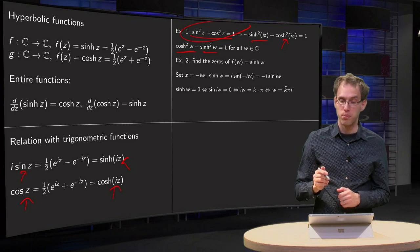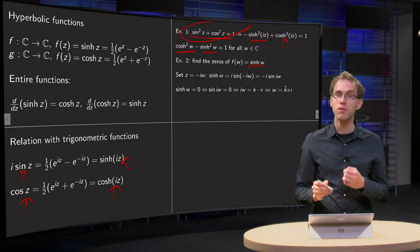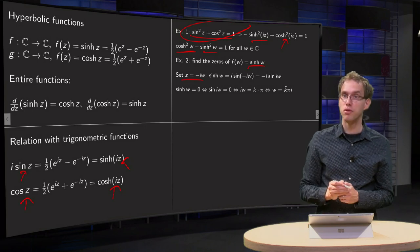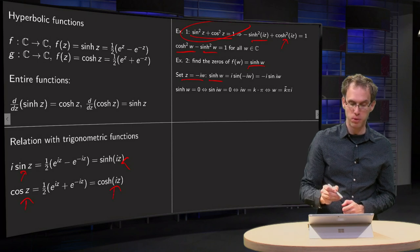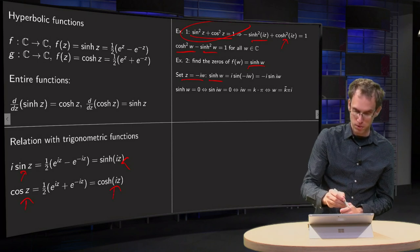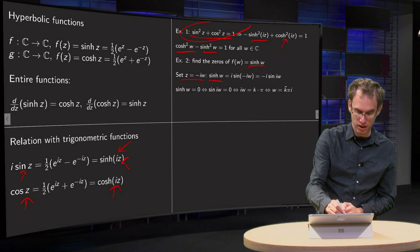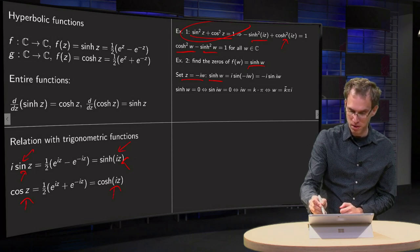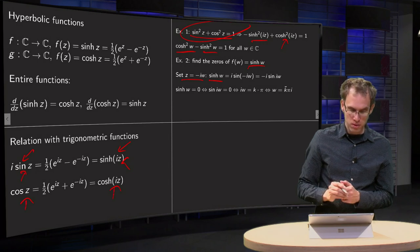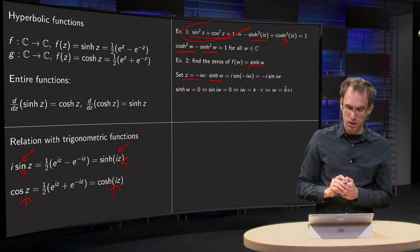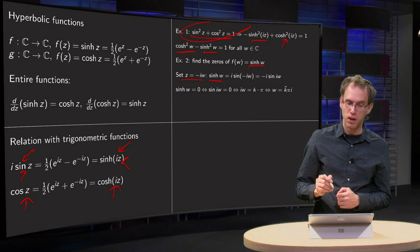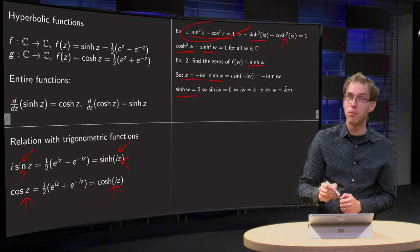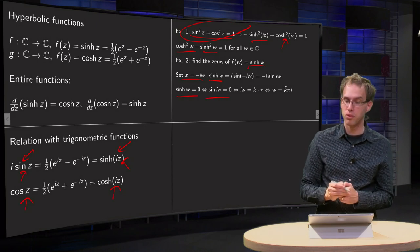Now we find all zeros, for example, of sine hyperbolic of w. You substitute z equals minus i times w. Then you get sine hyperbolic of w — setting z equals minus i w gives you i times the sine of iw. So if you want to set this to zero, that means sine hyperbolic of w equals zero if and only if sine of i times w equals zero.